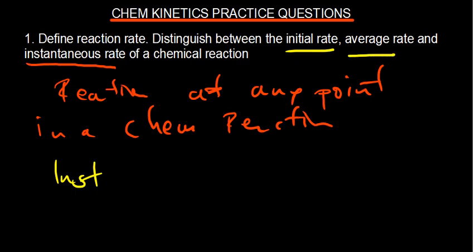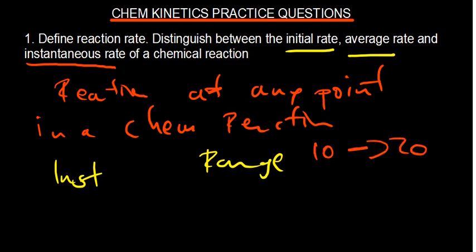The average rate of a chemical reaction is the rate over a given period or range of time. For example, from 10 to 20 seconds — you look at the concentrations at both time points. The rate of change of concentration within that range is called the average rate. That is how these three types of rates differ.